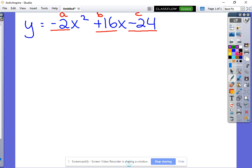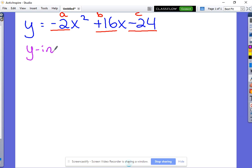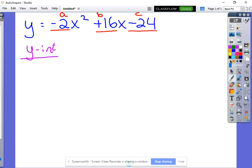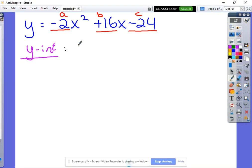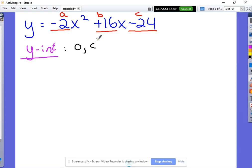So the first thing we can talk about is we can start by finding what is the y-intercept of our equation. And this is the easiest part, because when your function is in standard form, the y-intercept is simply the c value. It's 0, c. So our c value in this case was negative 24, so our y-intercept is 0, negative 24.